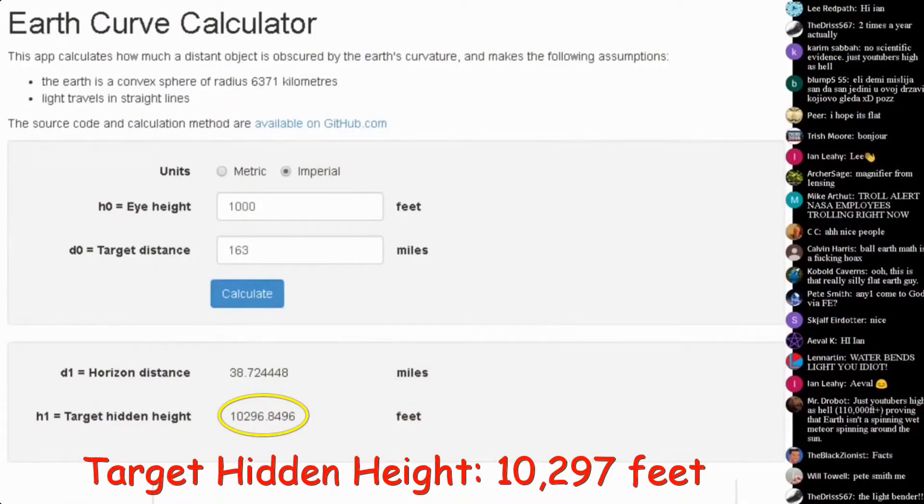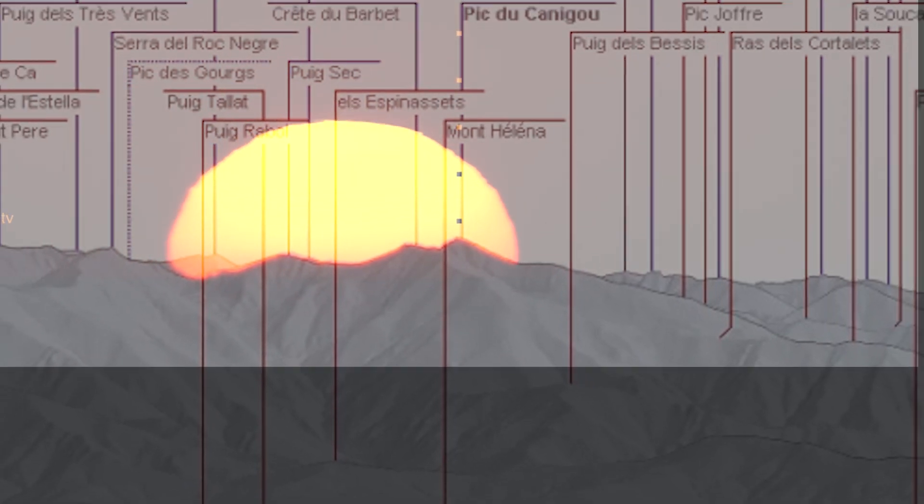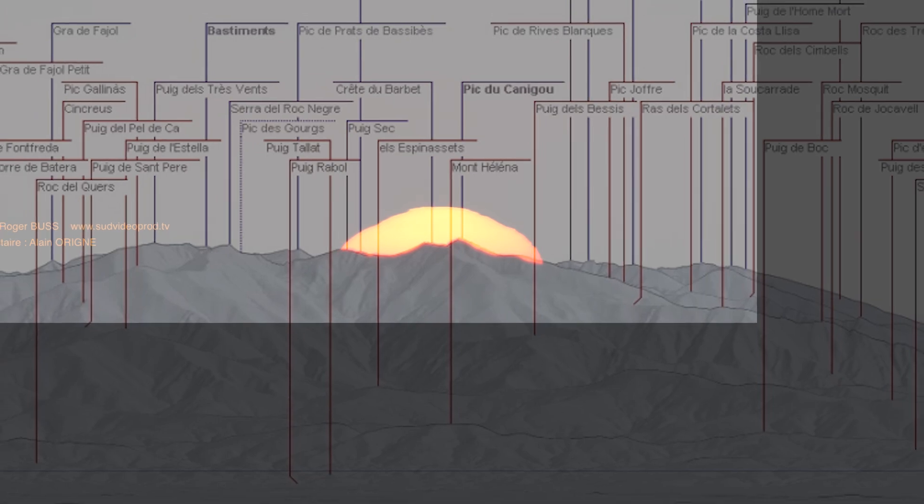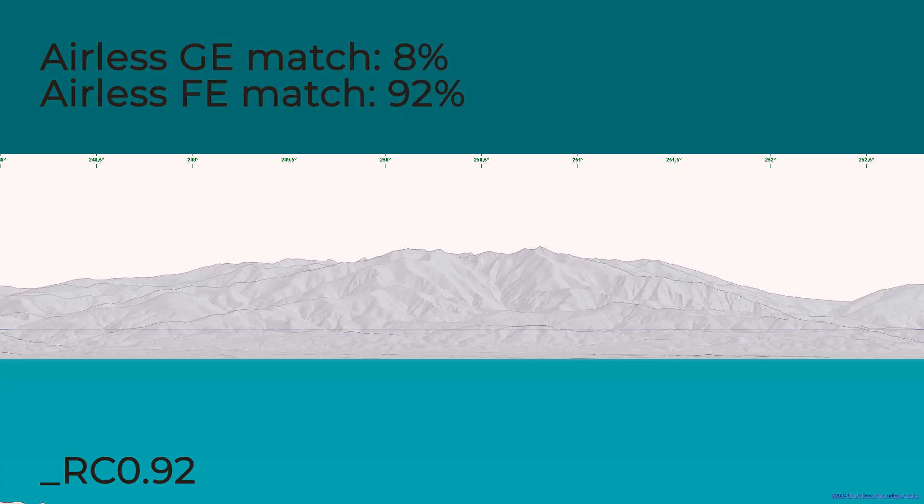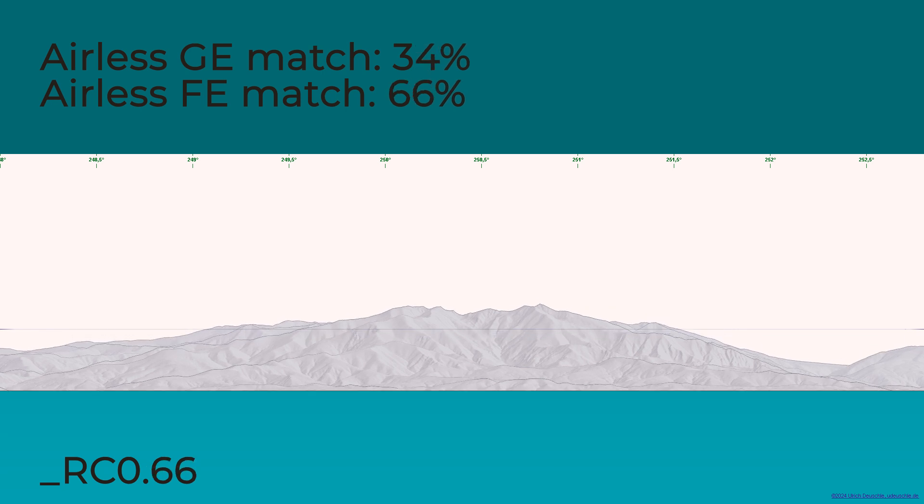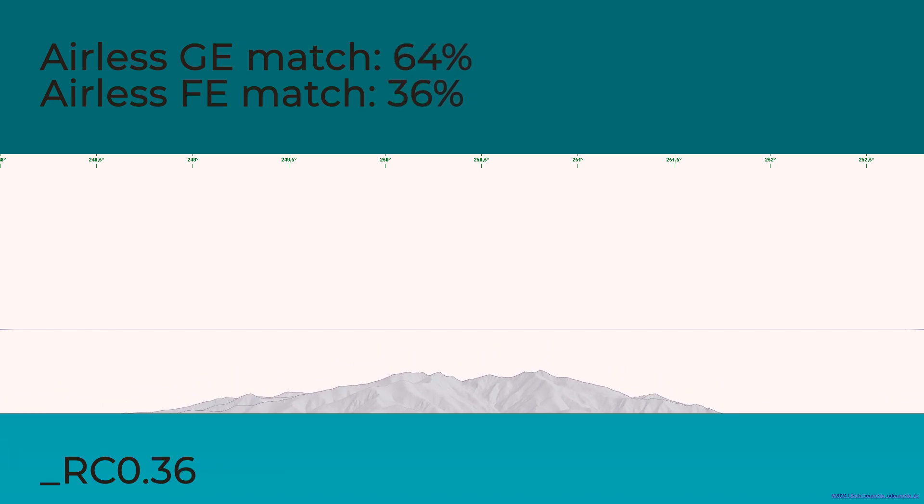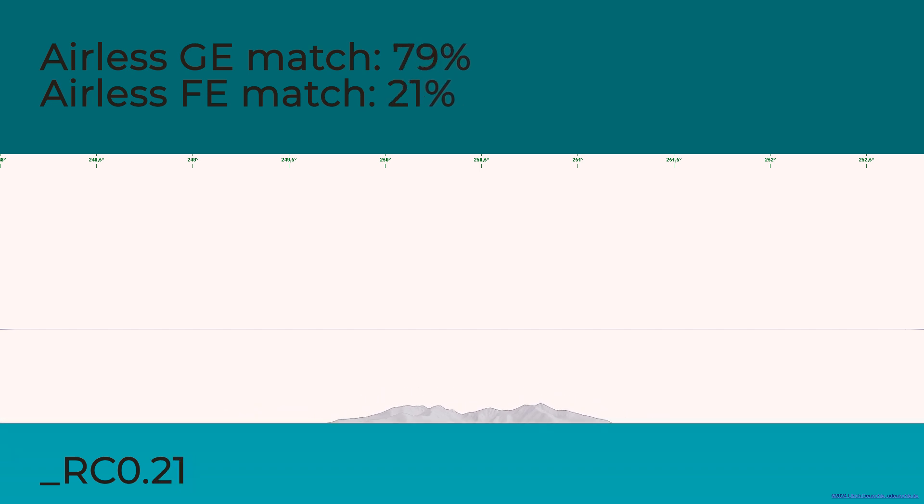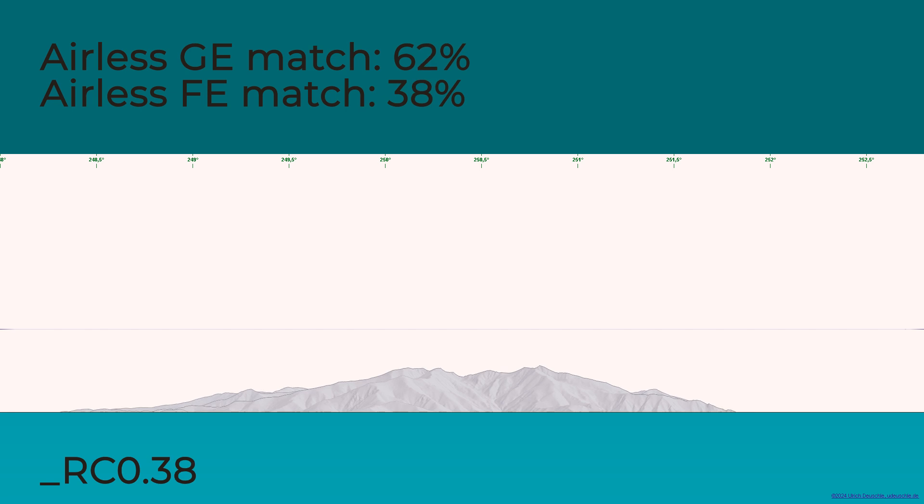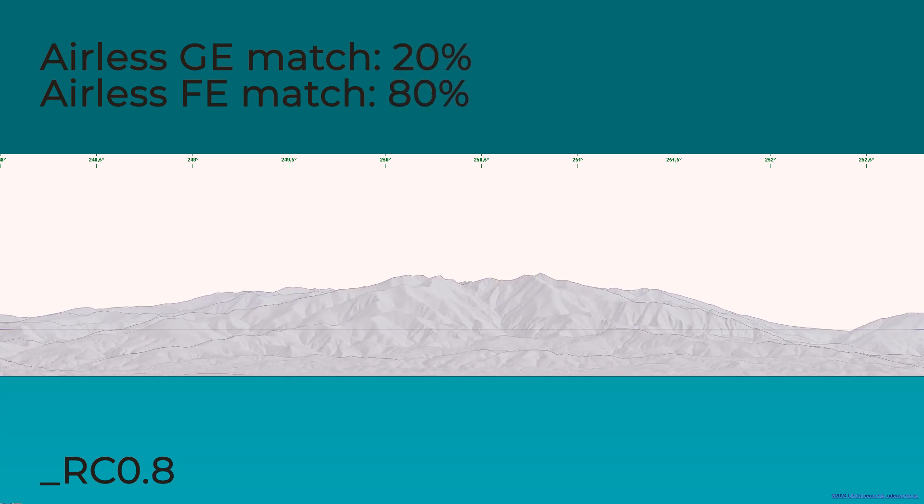So, on one hand, we have an airless globe that doesn't predict the view, and on the other hand, we have an airless flat earth that fails too. And what I like to know is which model fails the most, or in opposite words, which description of our planet fits reality the best. Youdeutschel allows you to move from a flat earth to a globe using a hundred steps. Here I downloaded all the 101 steps ranging from RC1 to RC0 with increments of 0.01.